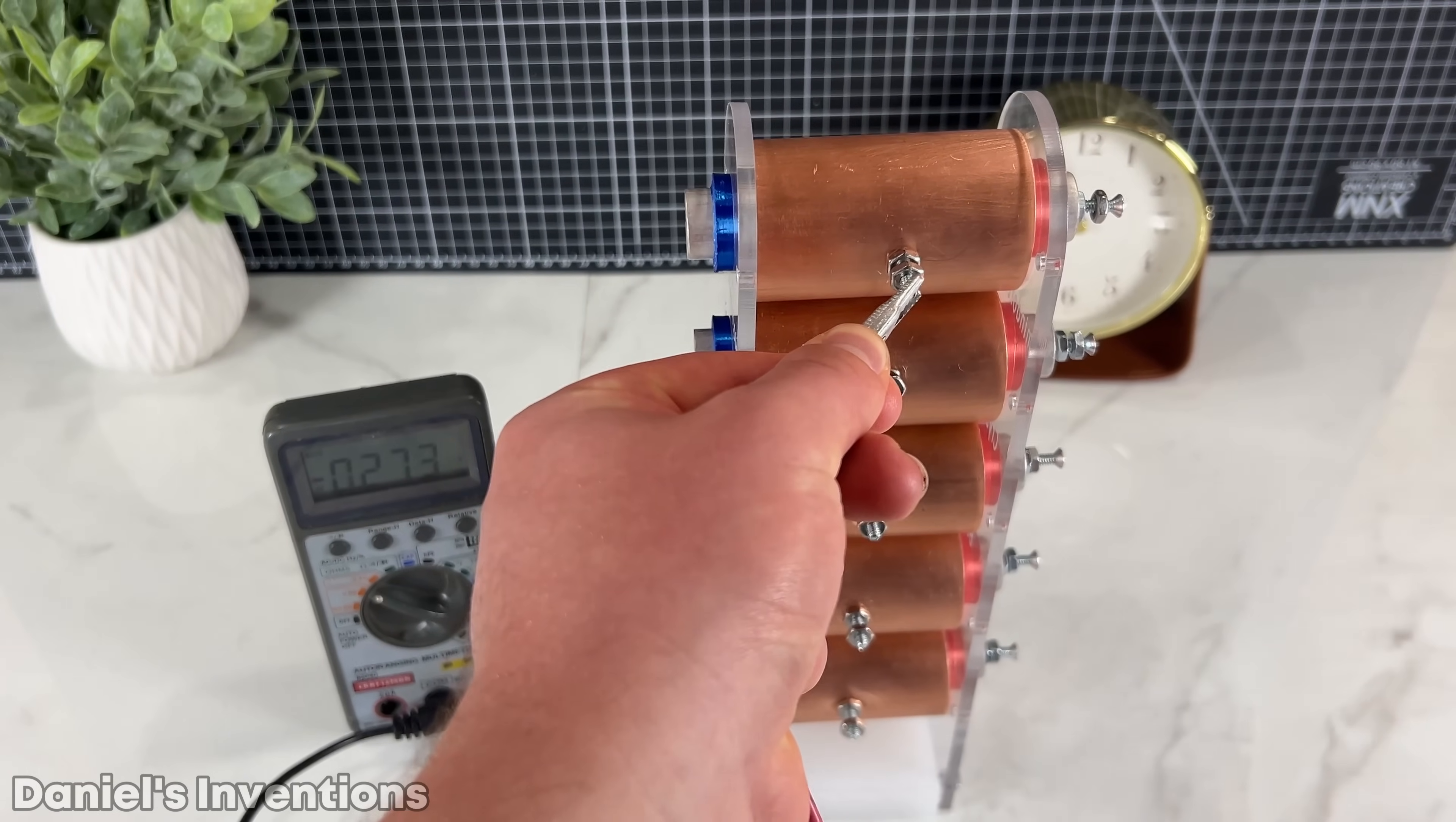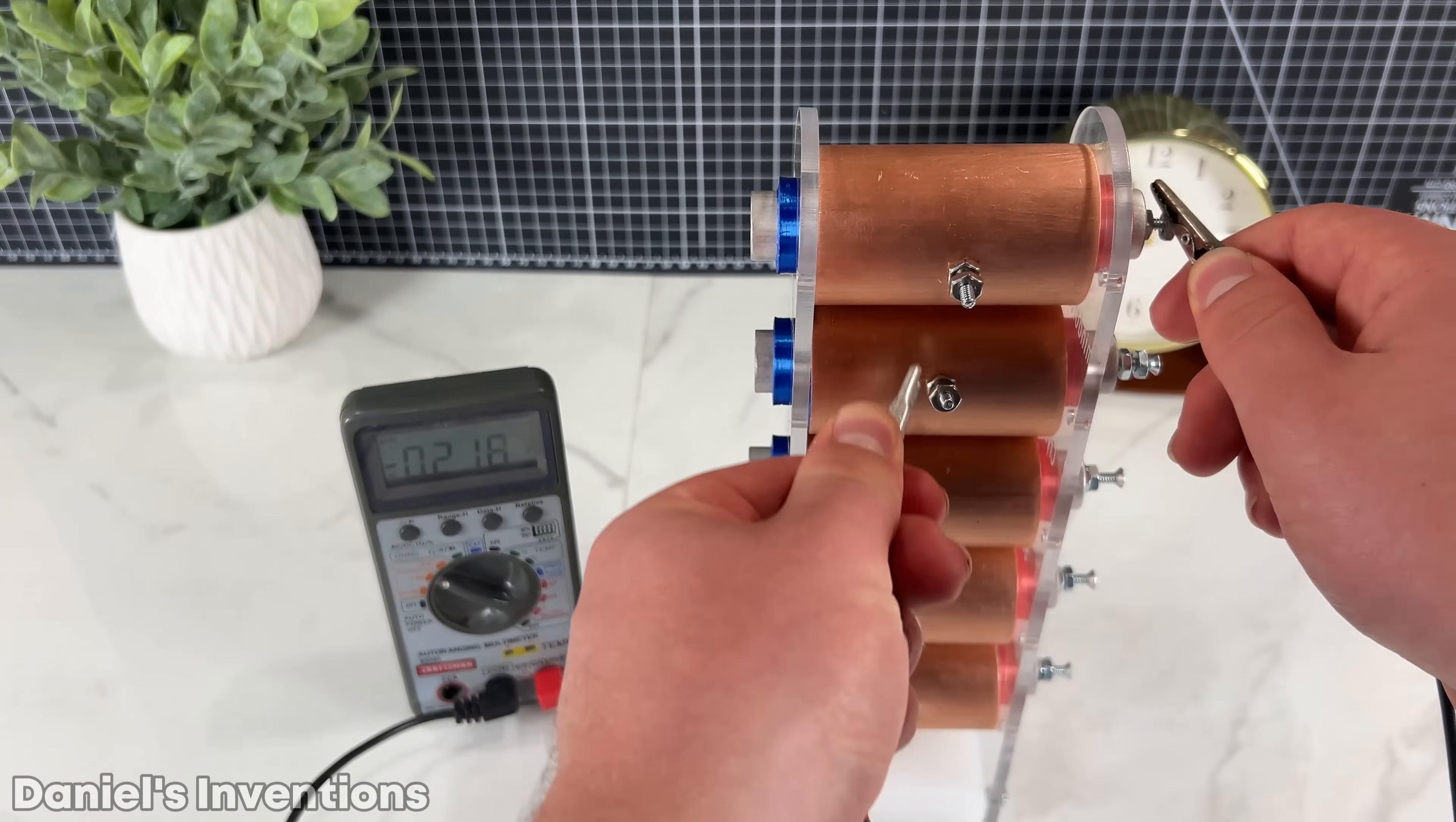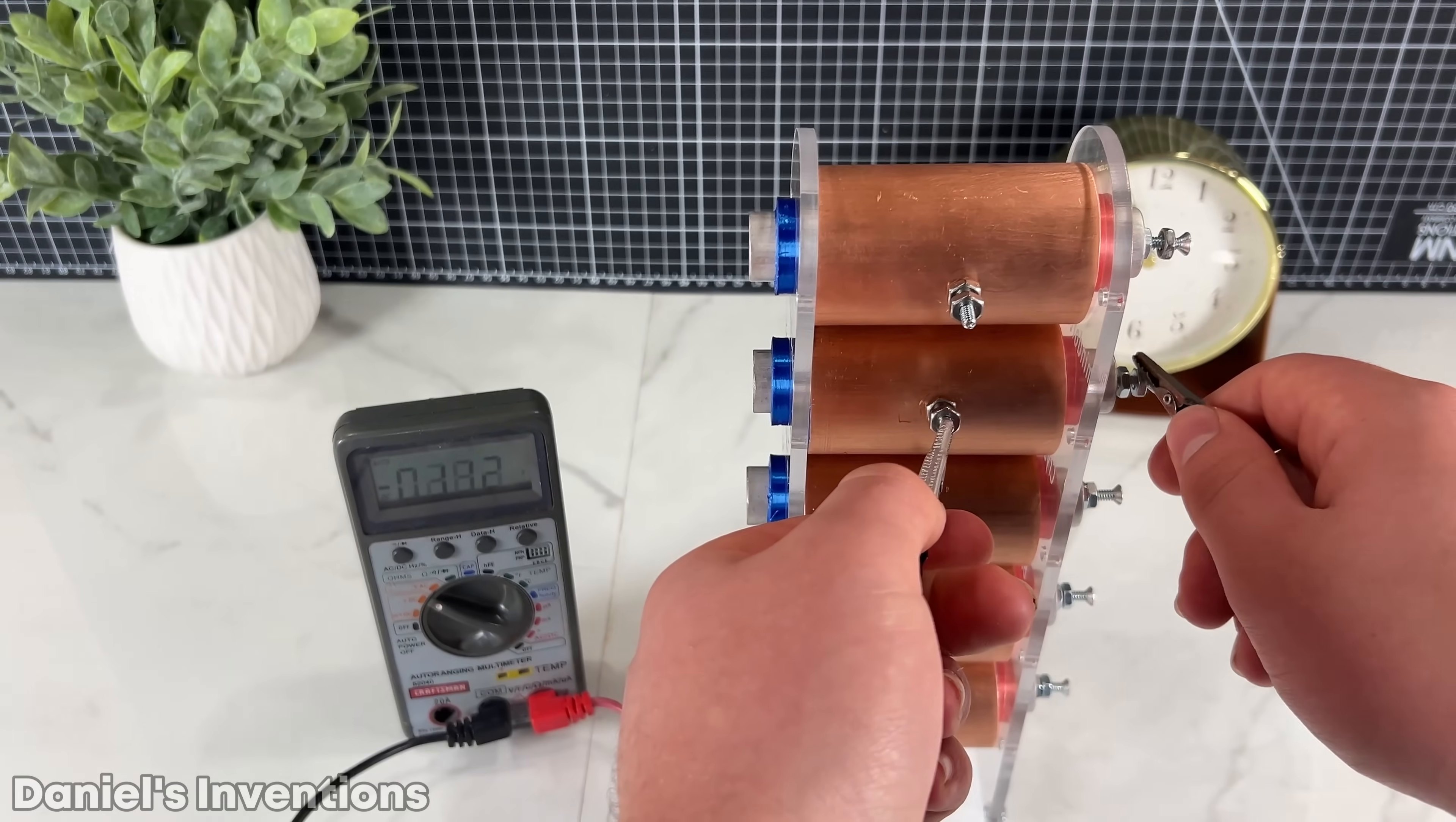All the cells are at a slightly different voltage potential. That's probably because the ingredients didn't get mixed 100% thoroughly.